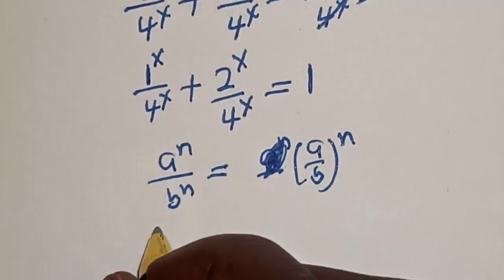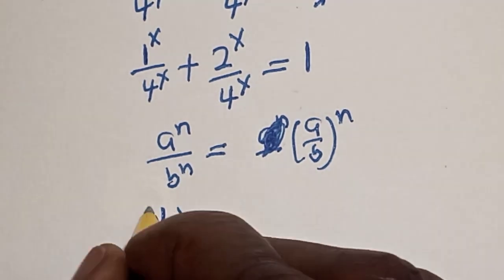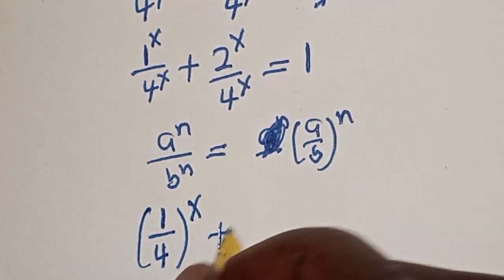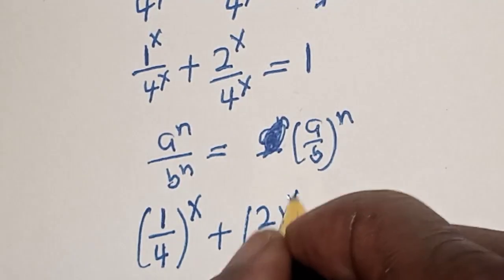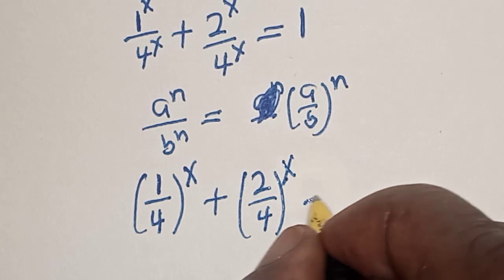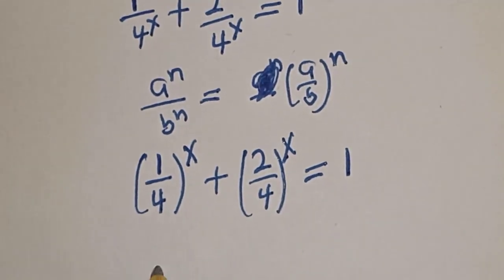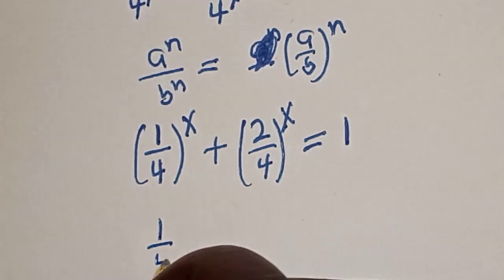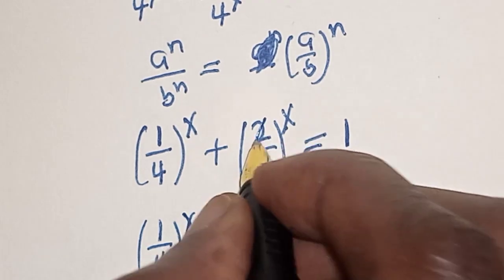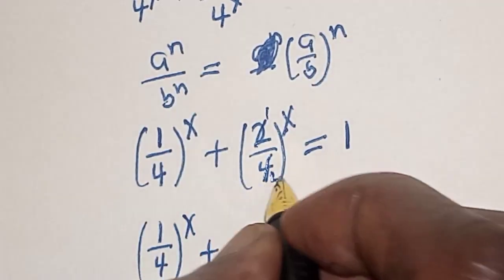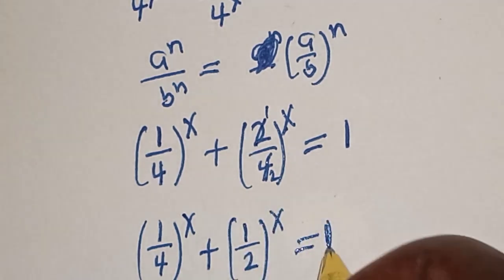Applying that rule, this becomes (1 over 4) raised to the power s plus (2 over 4) raised to the power s is equal to 1. Now 2 over 4 simplifies to 1 over 2, so we have (1 over 4) raised to the power s plus (1 over 2) raised to the power s is equal to 1.